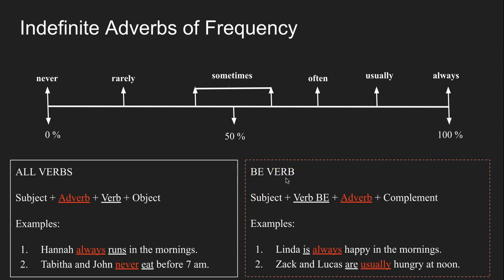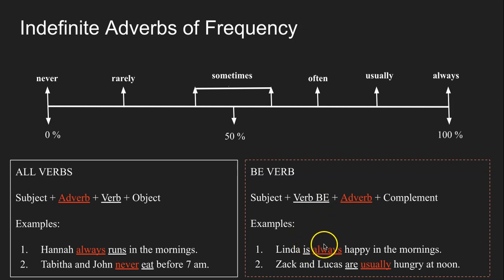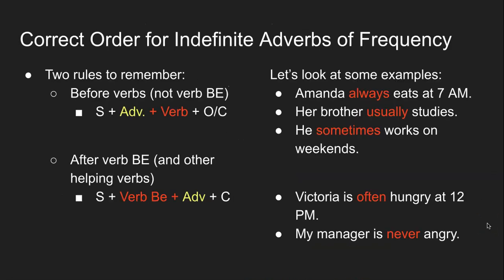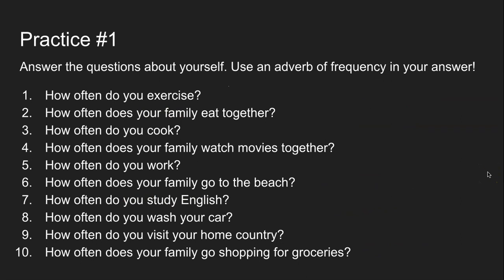We use the adverb before the verb, except for the verb 'be' and other helping verbs — these use adverbs of frequency differently. With the verb 'be,' you use the verb first, then the adverb second — it is a different order because 'be' is special. This page shows the correct order one more time: the adverb goes before the verb for all verbs except 'be.' With 'be,' the adverb comes after. Look at the examples — adverb before the verb, and with the verb 'be,' the verb comes before the adverb.